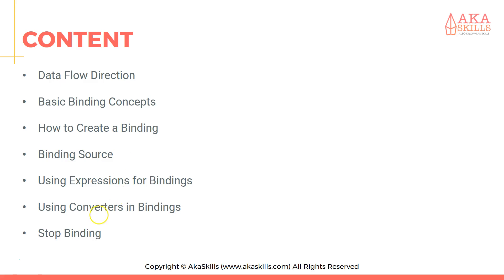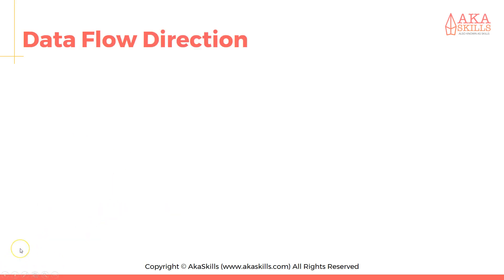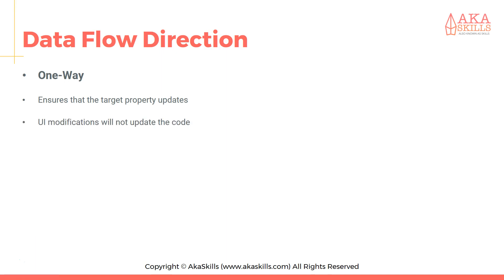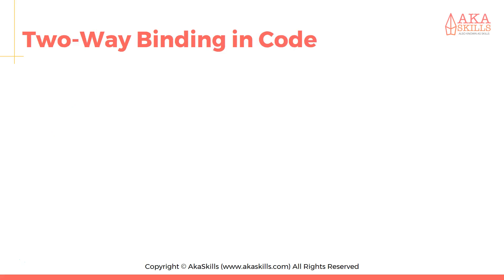So what is data flow direction? The first is one-way, which ensures that the target property updates, but UI modifications will not update the code. The other direction is two-way, which ensures reflection of changes in both directions.